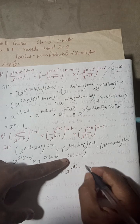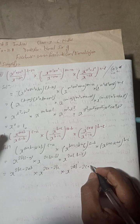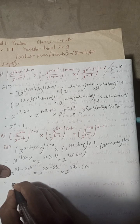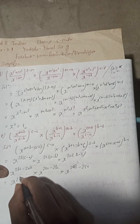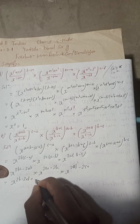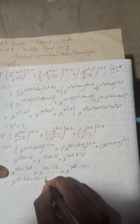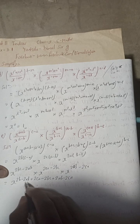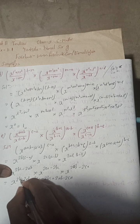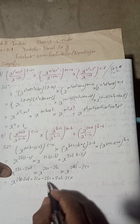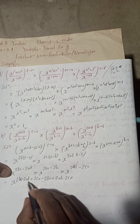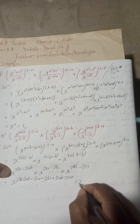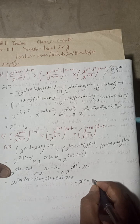Adding the powers: we get 2bc minus 2ab, plus 2ca minus 2bc, plus 2ab minus 2ca. Now 2bc and minus 2bc cancel, minus 2ab and plus 2ab cancel, plus 2ca and minus 2ca cancel. So the remaining power is zero — x to the power 0 equals 1. This is the complete solution.